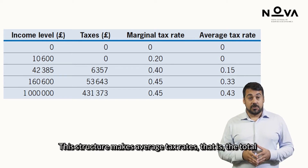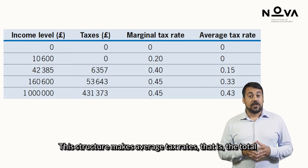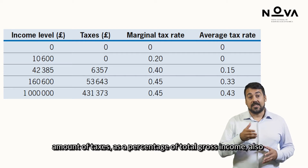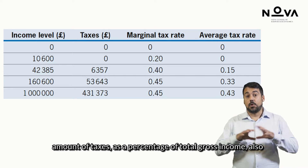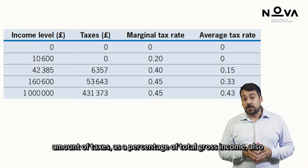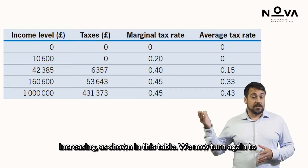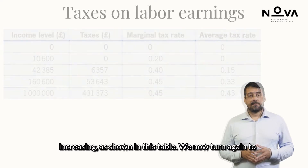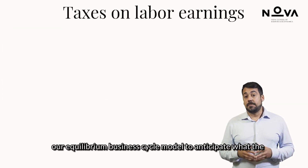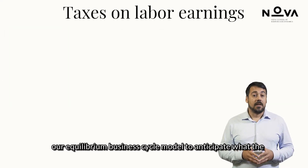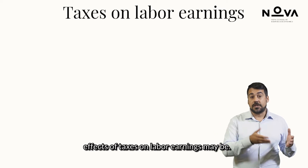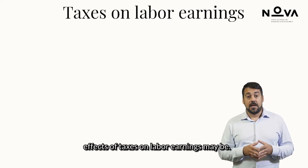This structure makes average tax rates — that is, the total amount of taxes as a percentage of total gross income — also increasing, as shown in this table. We now turn again to our equilibrium business cycle model to anticipate what the effects of taxes on labour earnings may be.